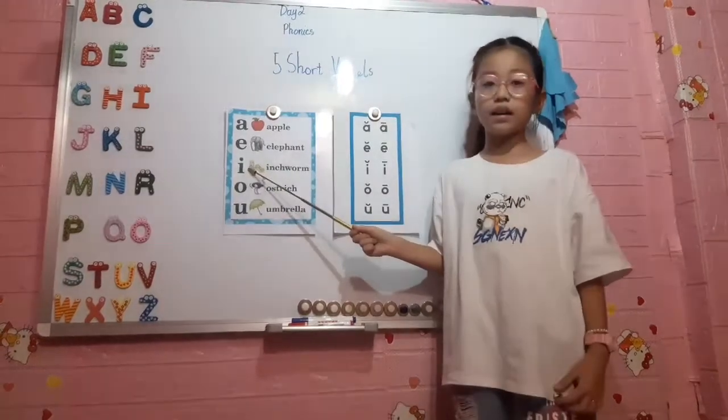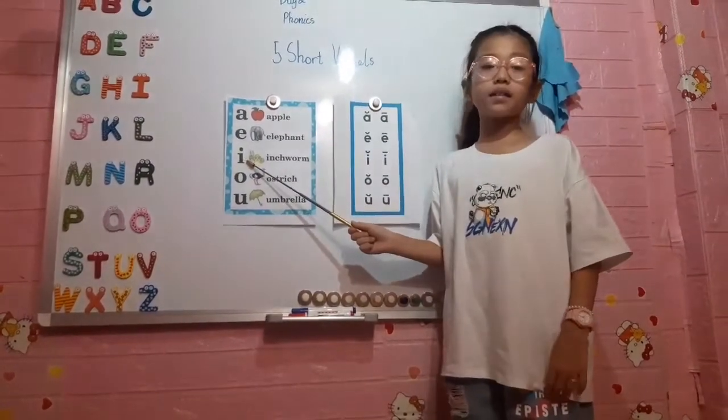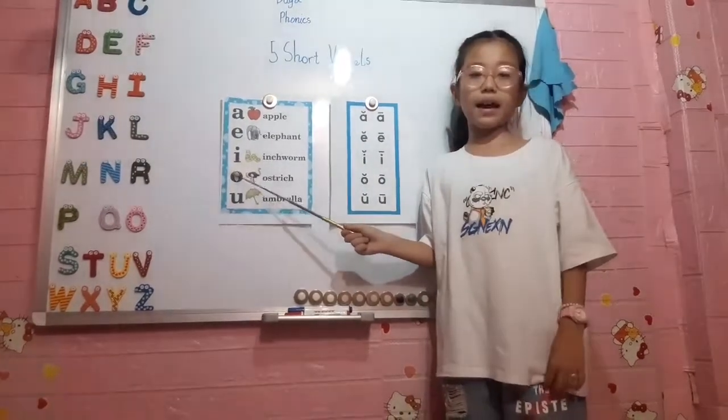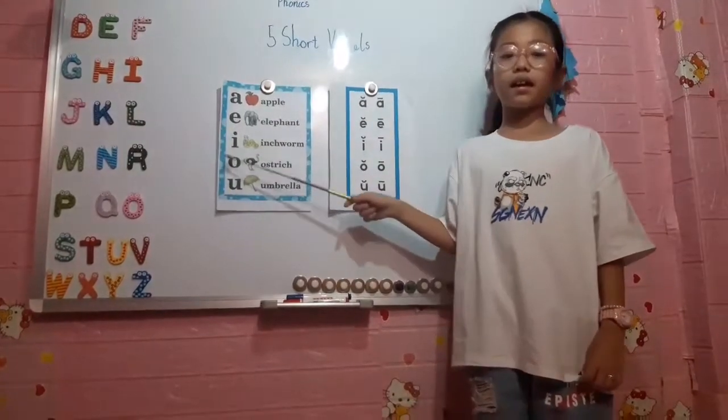E said E, E, E. I said I, I as an inchworm short I said I, I, I.